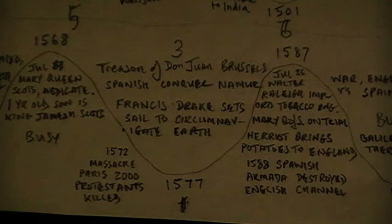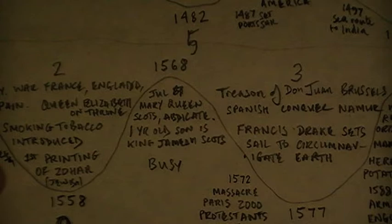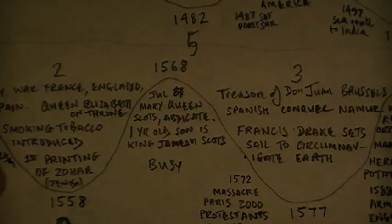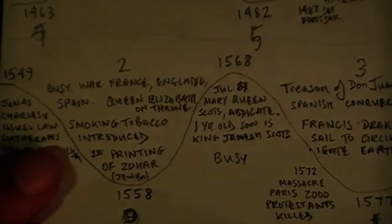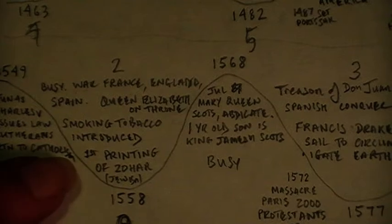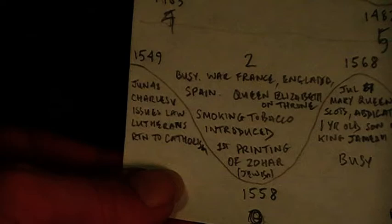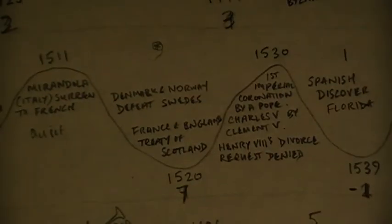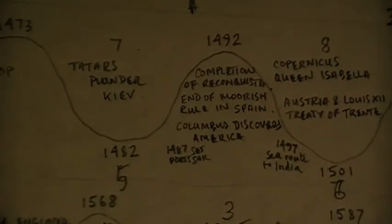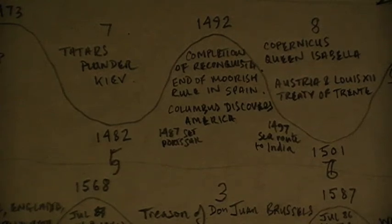Mary Queen of Scots abdicates on a good time, Queen Elizabeth sits on the throne on a bad time. Now we get to a big one — 1492. That was a big year: end of Moorish rule in Spain, that's completion of the Reconquista, and Columbus discovers America.